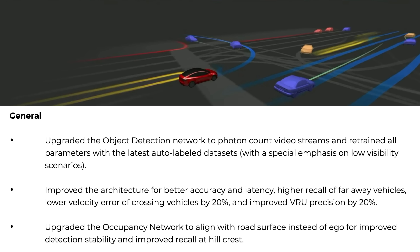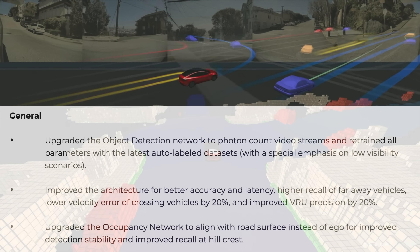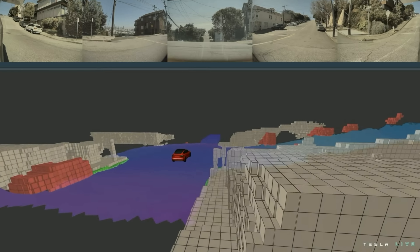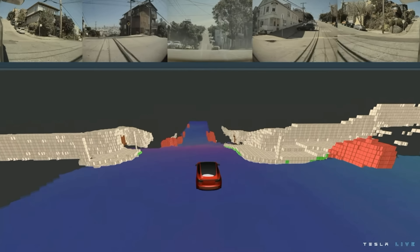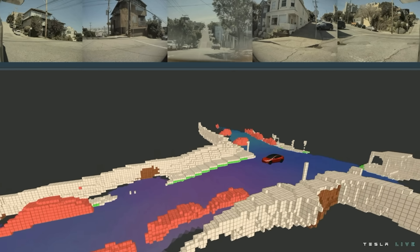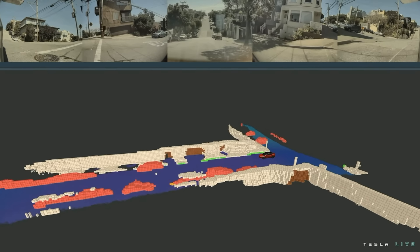Tesla has improved the architecture for better accuracy and latency, higher recall of faraway vehicles, lower velocity error for crossing vehicles by 20%, and improved vulnerable road user precision by 20%. Additionally, Tesla upgraded the occupancy network to align with road surface instead of ego — the vehicle — for improved detection stability and improved recall at hill crests. This likely means Tesla is anchoring object positions in the occupancy network to the road surface rather than the vehicle's position, improving stability when things may be out of vision temporarily.